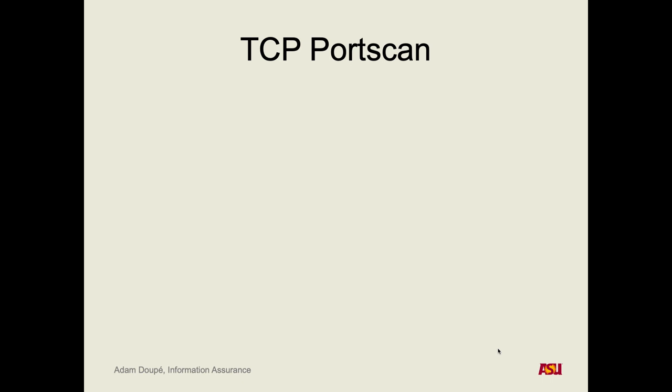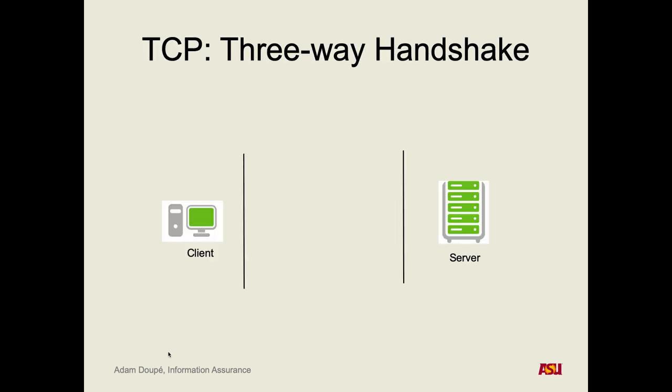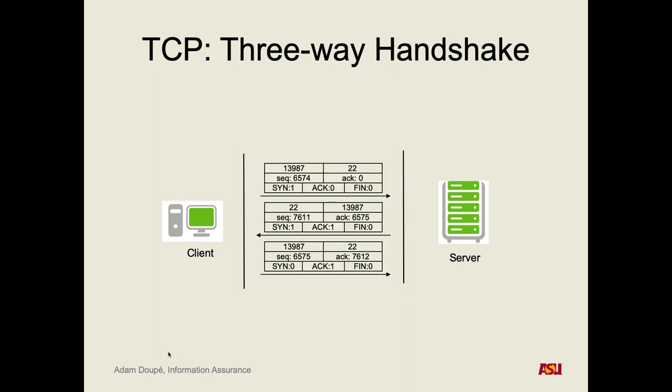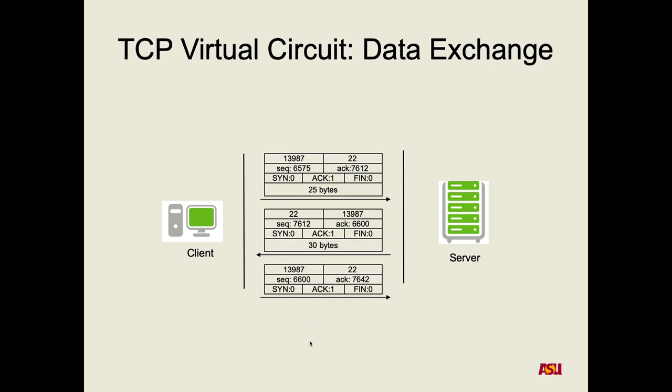The operating system manages a TCP/IP stack that handles all of this. Going back to examples, the server uses a C function like listen() to say it wants to listen on port 80, which tells the OS. Once the three-way handshake is established — because the OS handles that for the application — the application is notified, and using send() and receive() it can exchange data.